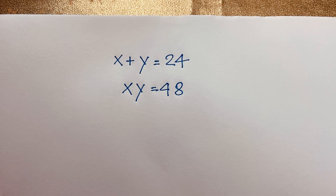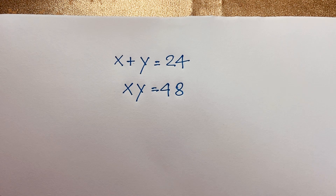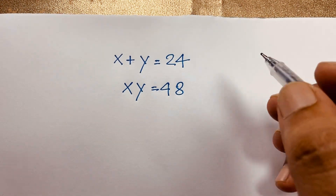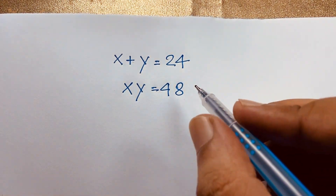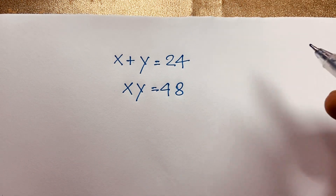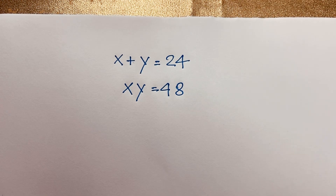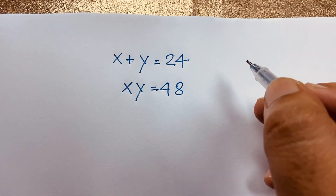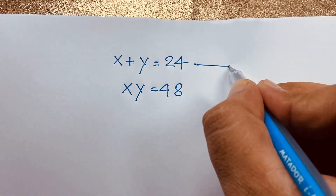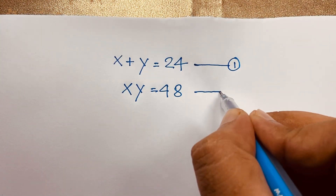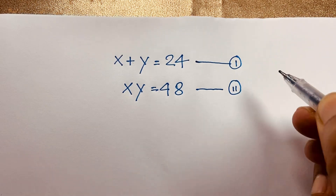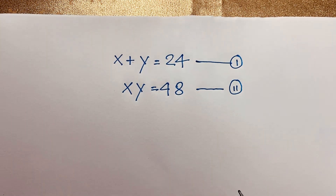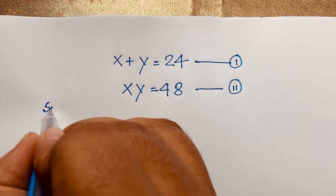Hello everyone, welcome to Rasha's classroom. Today we have solved an interesting German Math Olympiad question, which is x plus y is equal to 24, xy is equal to 48. How to solve this interesting German Math Olympiad question? I solved this question using an easy method.